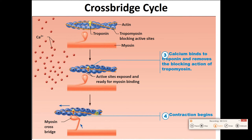So: neuron releases acetylcholine. Acetylcholine causes the muscle cell to have an action potential. Action potential goes down the T-tubule. Action potential in the T-tubule causes the release of calcium. Calcium binds to troponin. Troponin moves, moving tropomyosin, exposing actin. Myosin then grabs onto actin, uses energy from ATP, pulls on actin. The two fibers overlap and we get contraction.